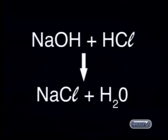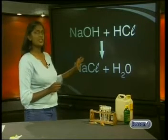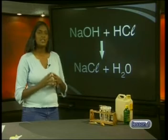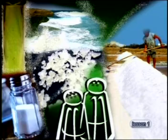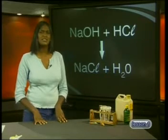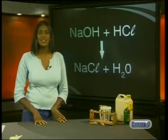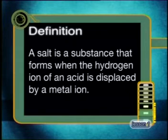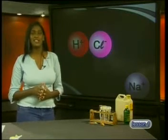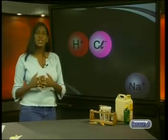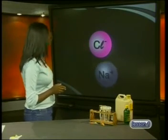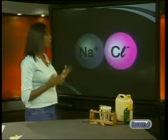Sodium hydroxide plus hydrochloric acid react to form sodium chloride and water. Notice that the equation is balanced as it stands. Sodium chloride belongs to a group of substances called salts. In fact, sodium chloride is known as table salt and is used to flavor food. But what is a salt? A salt is a substance that forms when the hydrogen ion of an acid is displaced by a metal ion. We used hydrochloric acid to make sodium chloride — when hydrogen is displaced by sodium, we get sodium chloride.